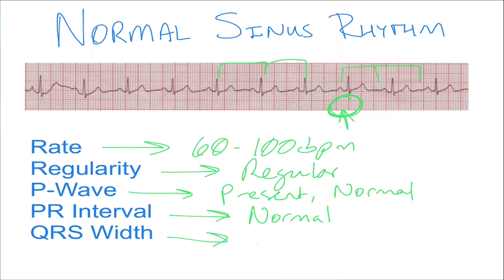The QRS width will also be normal. Remember, a normal QRS is less than three small boxes on your EKG paper. If you have all those things present, pretty good chance you're looking at normal sinus rhythm.